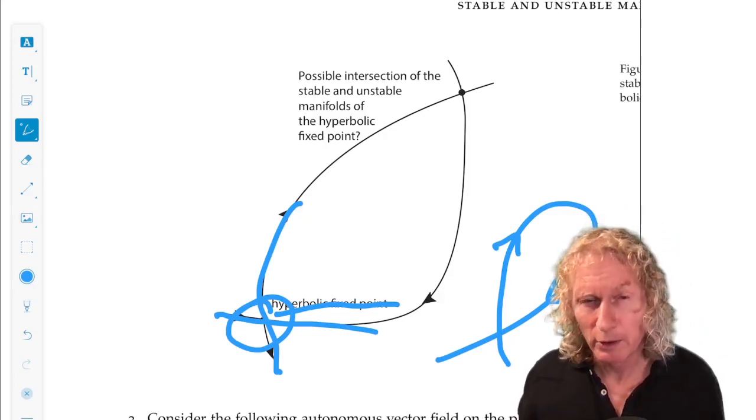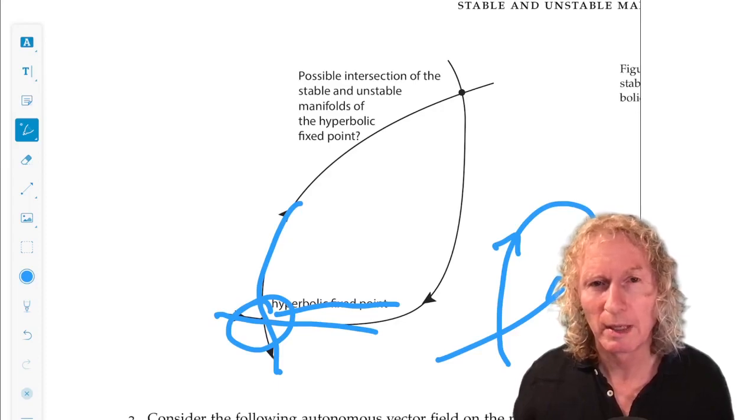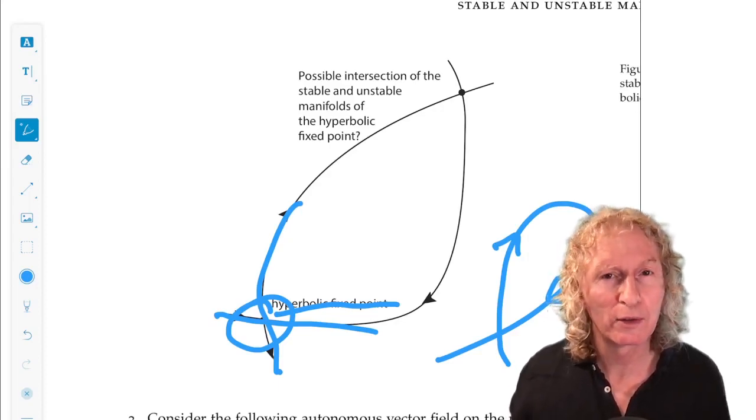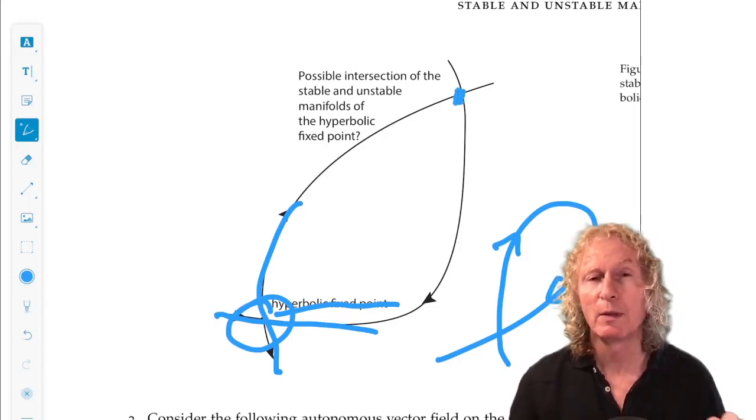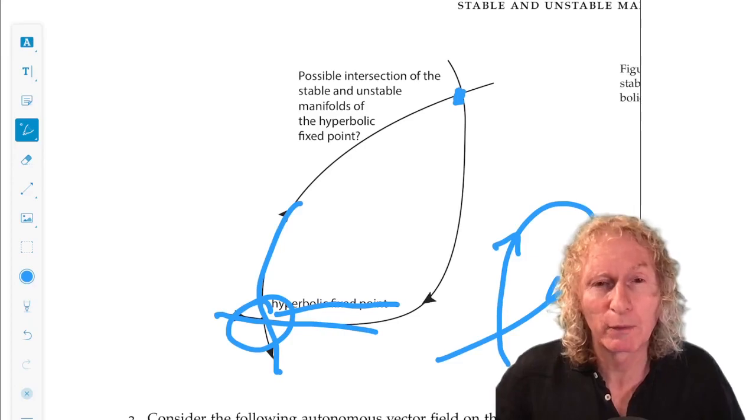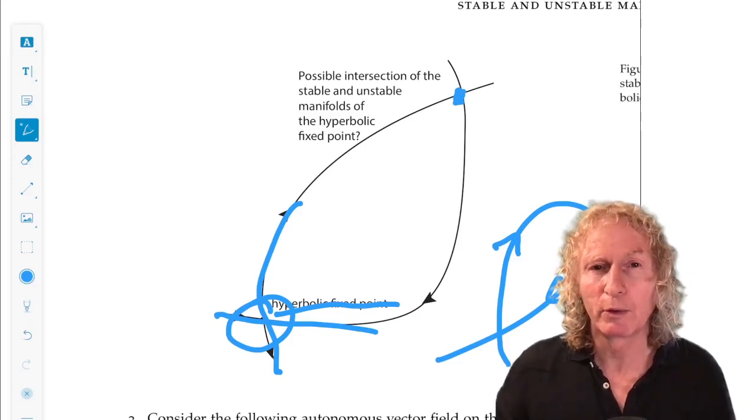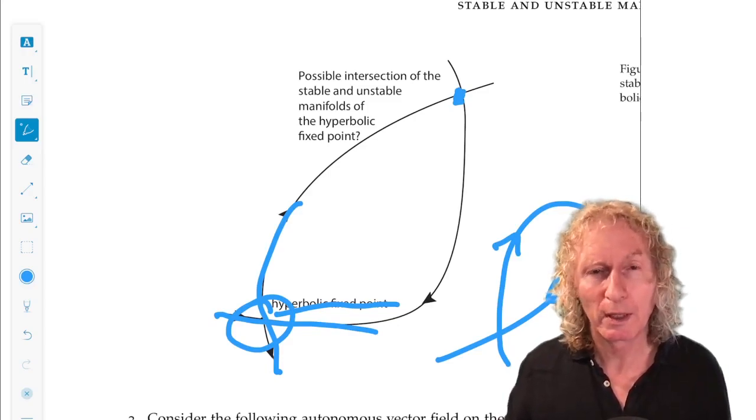And the answer is no. We're in R^2. And the reason for that is invariance of the manifolds. This point of intersection must remain in the stable manifold for all forward and backward time evolution. Similarly, it must remain in the unstable manifold for all forward and backward time evolution.